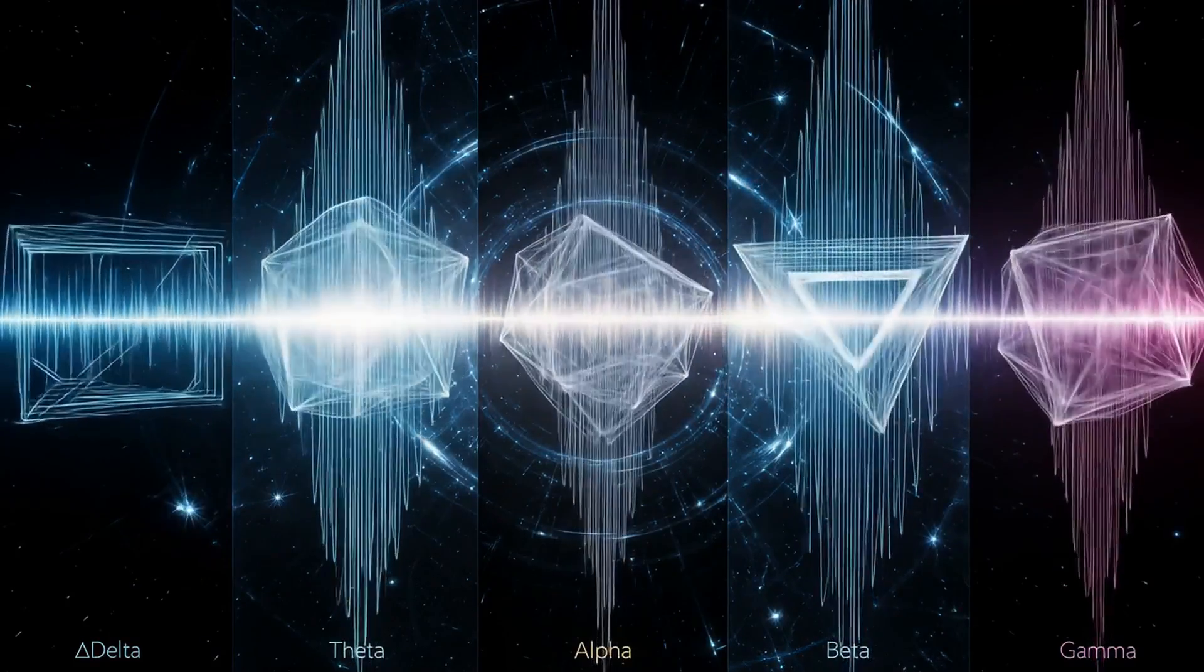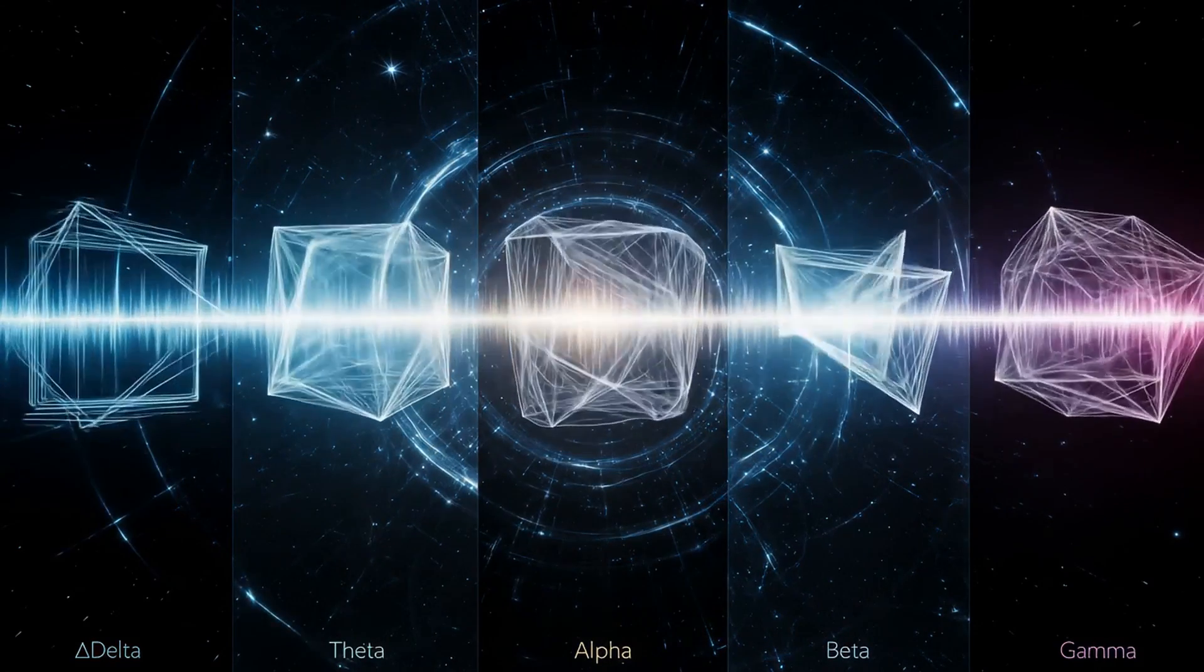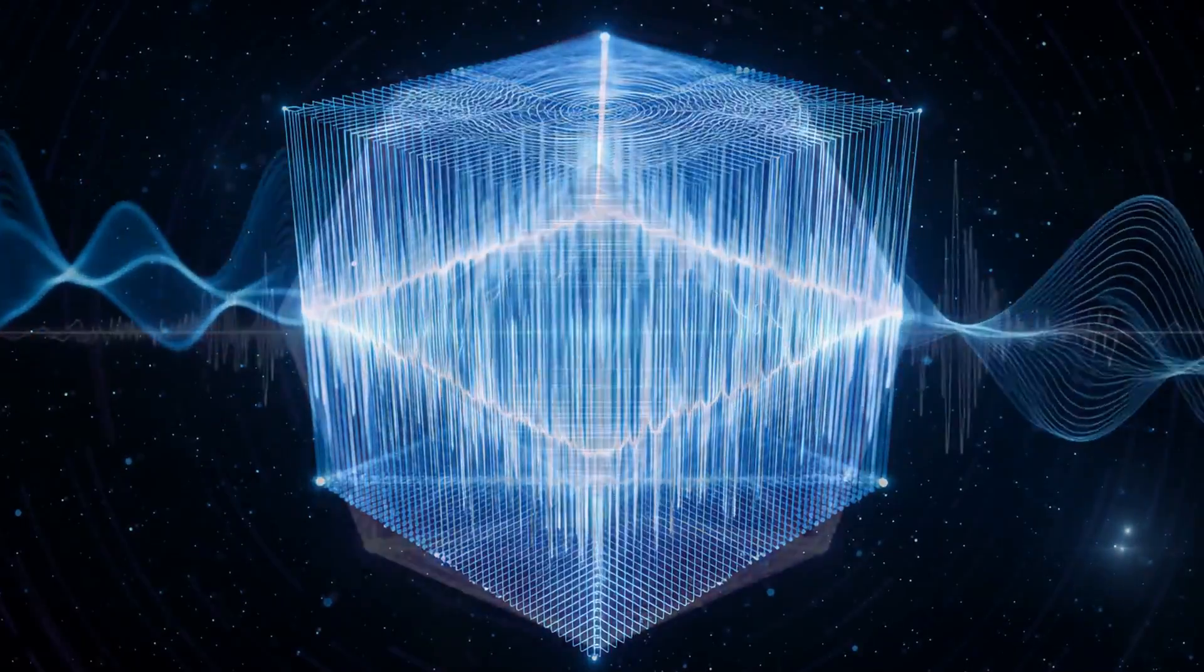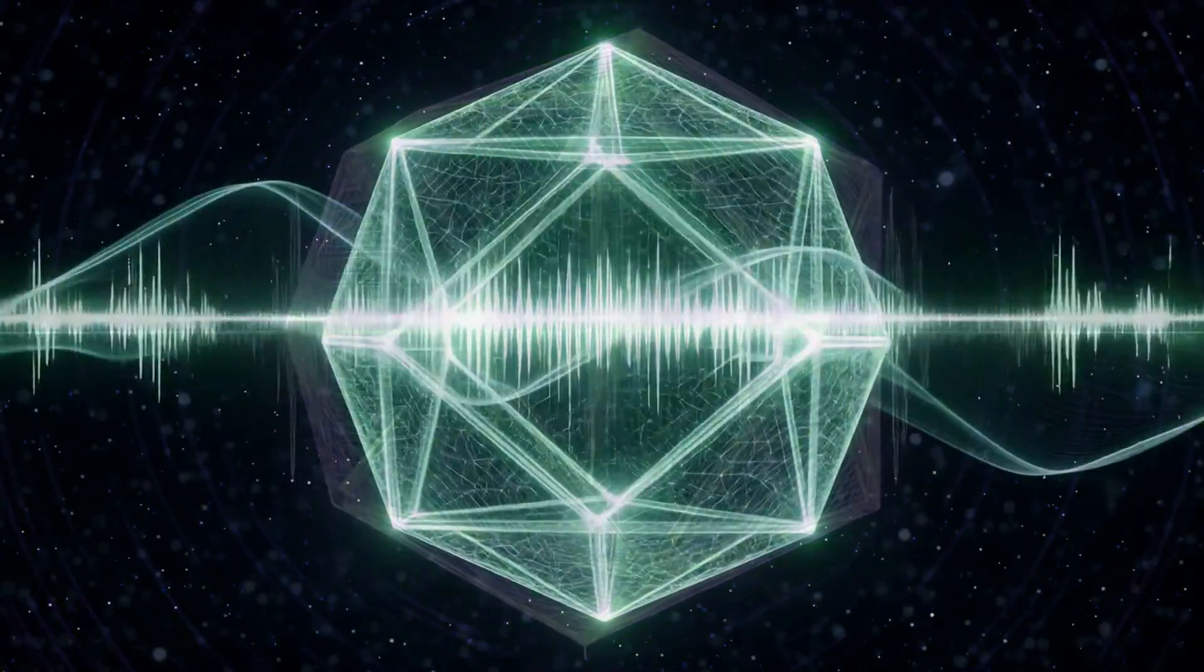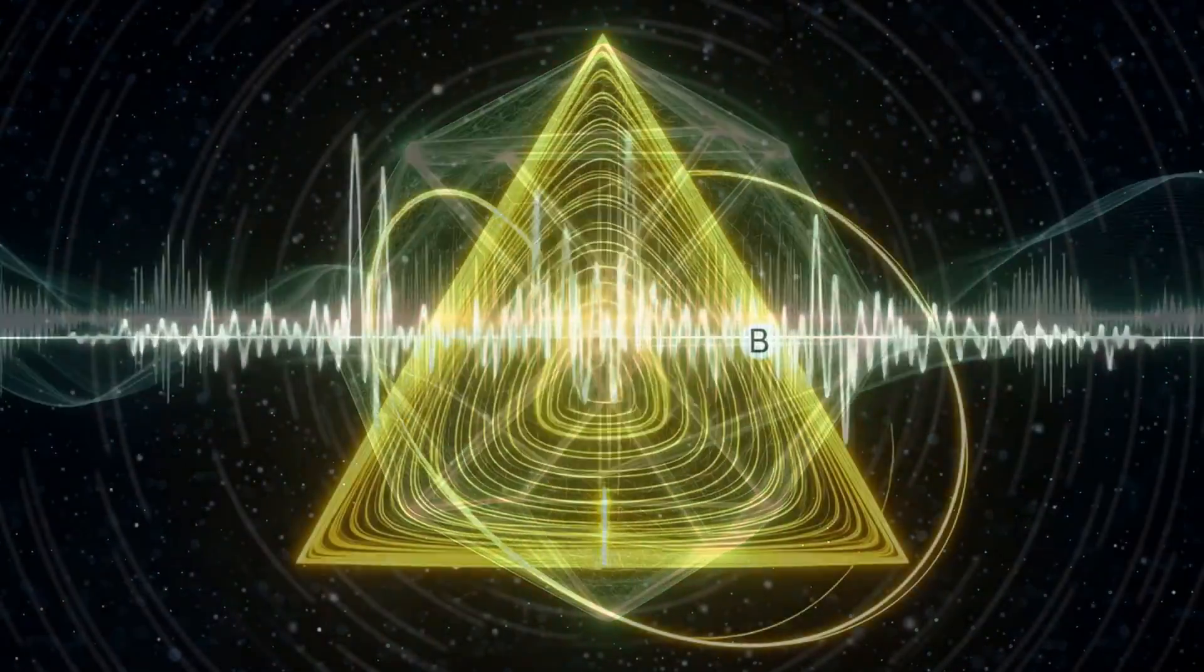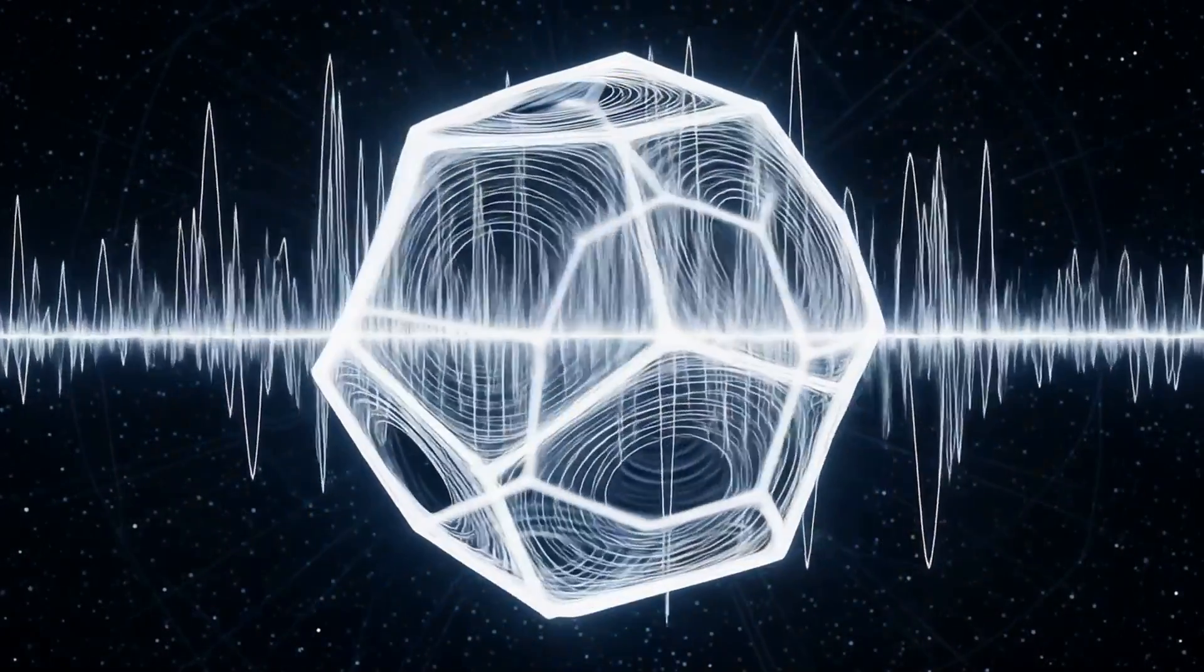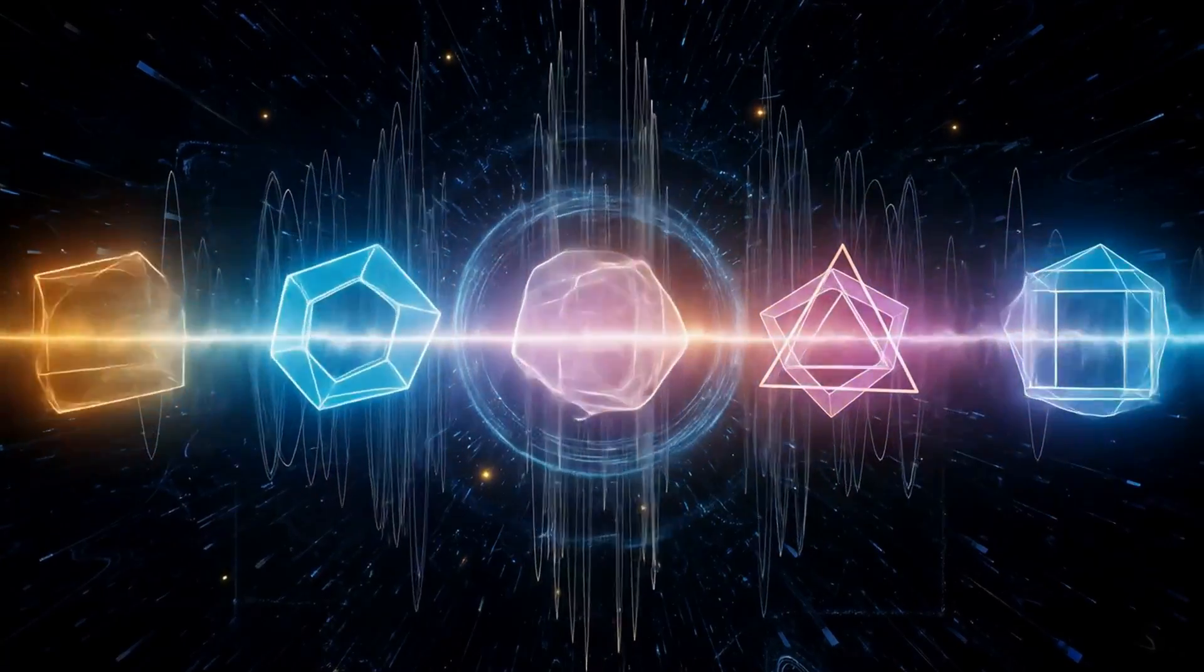Brain waves are geometric resonances of this structure. Delta waves correlate with the cube, anchoring deep rest instability. Theta arises from the icosahedron, guiding dreams and creativity. Alpha reflects the balance of the octahedron, bringing clarity and calm. Beta resonates with the focused sharpness of the tetrahedron. Gamma pulses through the dodecahedron, integrating perception into consciousness.